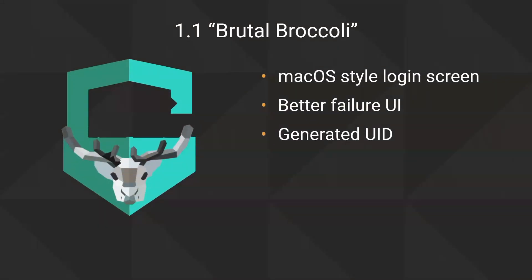We have a roadmap with vegetable-themed code names for Nomad Login AD. Version 1.1 is coming soon — it will add a macOS-style login screen as an option, a better failure UI with animation so you can clearly see what happened, and the generated UID option to create matching UIDs using the same algorithm as the Apple AD plugin. That way any new accounts get generated the same way and users will have the same UID across different Macs, just like they do with the Apple plugin.